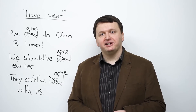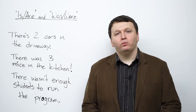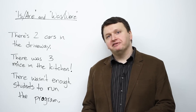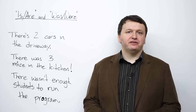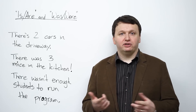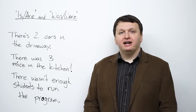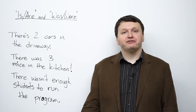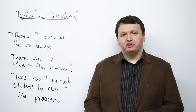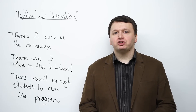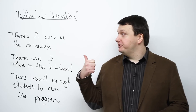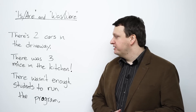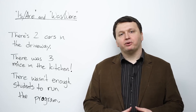Now let's move on to the final mistake, number five: is, are, was, were. This is a mistake between thinking there's one of something versus many of something. We use 'is' with he, she, or it, and 'are' with you or they — the plural. However, many English speakers make the mistake of using 'is' when they should use 'are', like in these examples: 'There is two cars in the driveway', 'There was three mice in the kitchen', 'There wasn't enough students to run the program.'